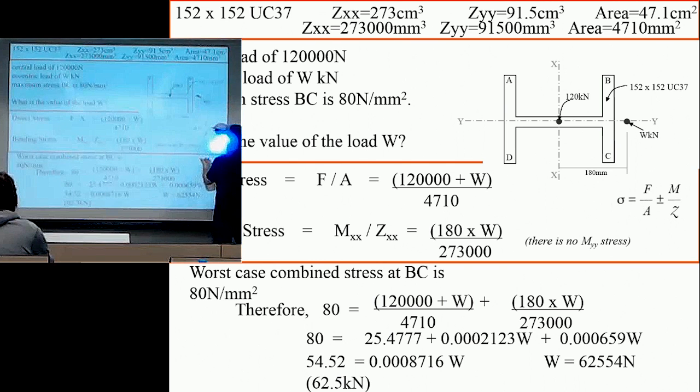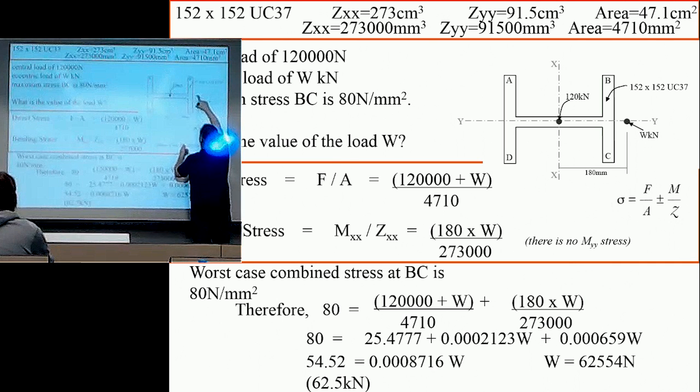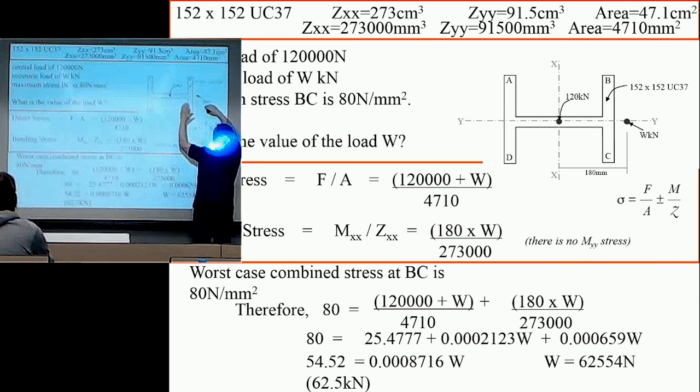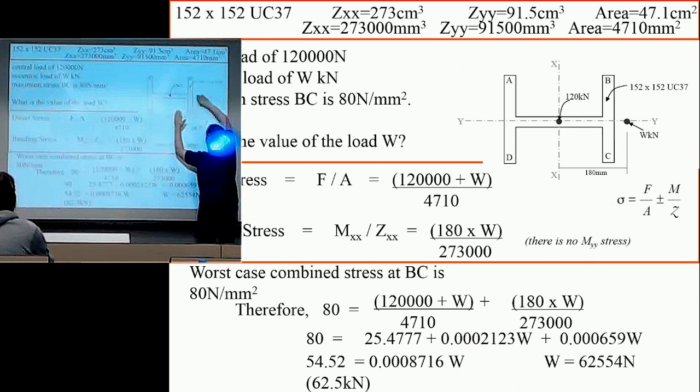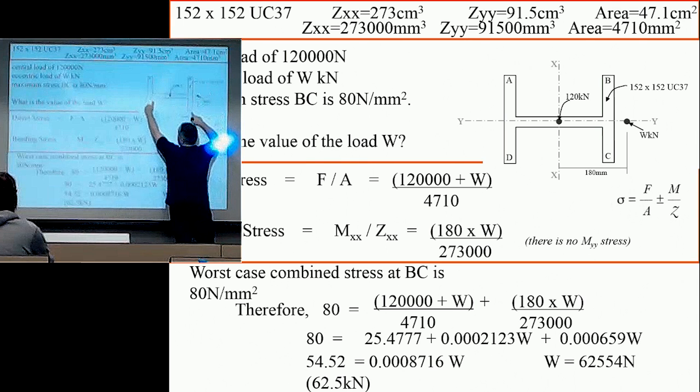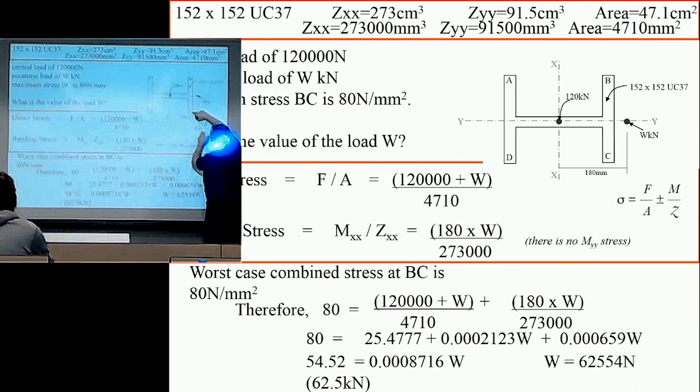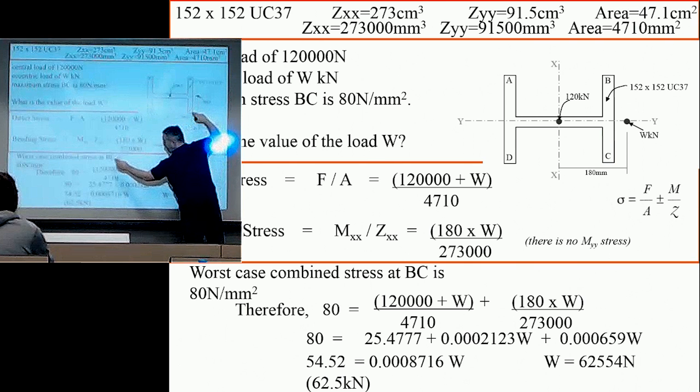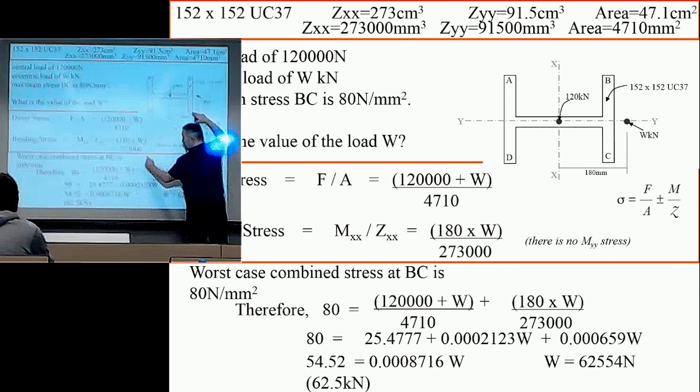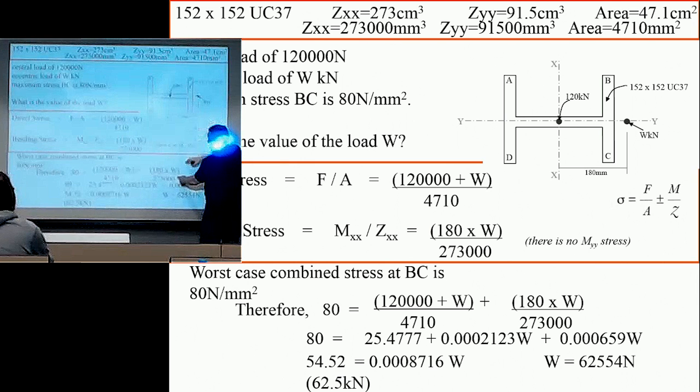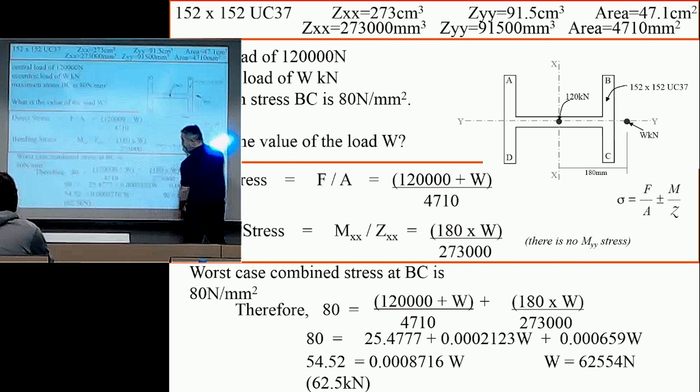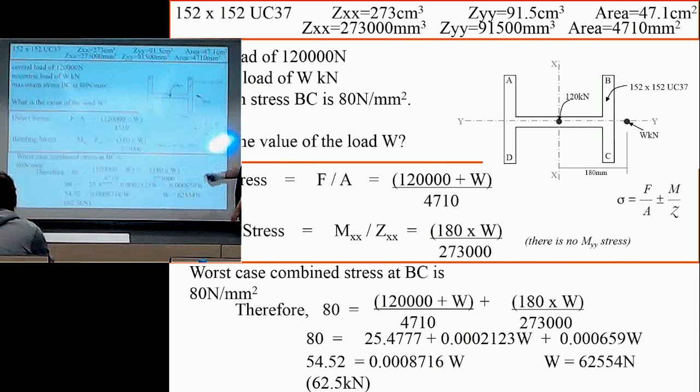So it's in compression. We've got plus F over A. In terms of this force, it will be twisting the column that way and creating compression along here, which will be positive, and tension along there, which will be negative. So by looking at this side, it's the compressive direct stress plus a compressive stress equals 80. The only unknown that we have there is the W. Then we can work out what our maximum W would be.